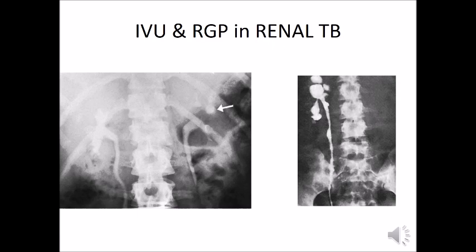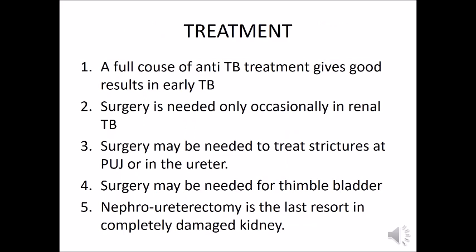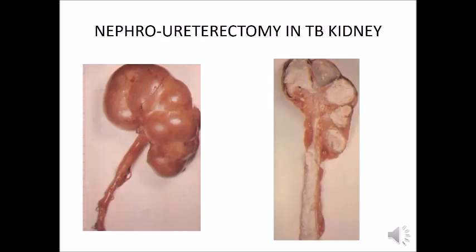This X-ray shows a cement kidney. For treatment, once renal tuberculosis is diagnosed, a full course of anti-TB treatment gives good results in early TB. Surgery is needed only occasionally — it may be needed for strictures at the pelviureteric junction or in the ureter, or for thimble bladder. Nephroureterectomy is the last resort in a completely damaged kidney.